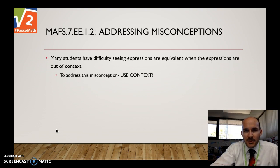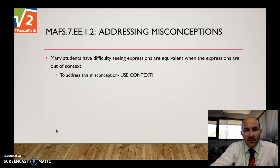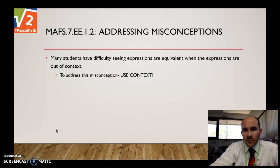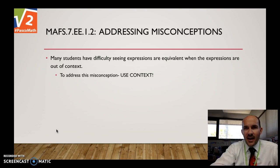As for student misconceptions, they might have difficulty seeing that expressions are equivalent when they're out of context. To address this misconception, just use context, because students can make sense of the math through context. If you're just saying x minus 2 tenths x equals 8 tenths x out of context, it may not click. But once you start putting percents and sales situations around it, then they can make sense of it for sure.